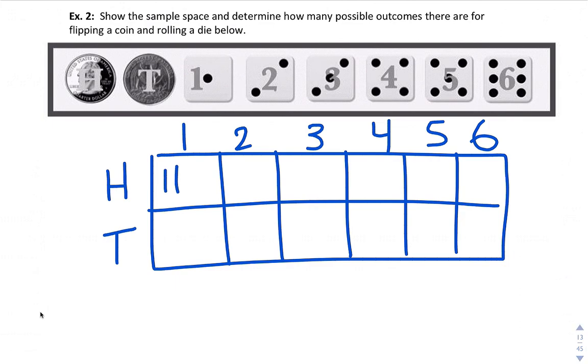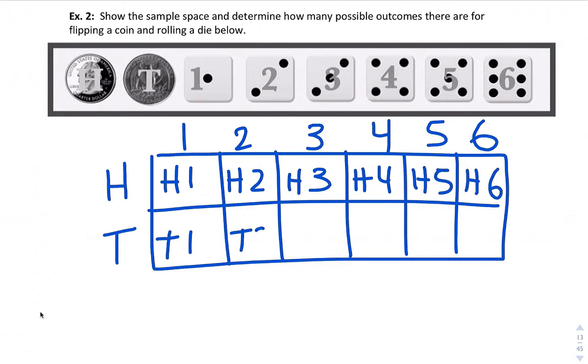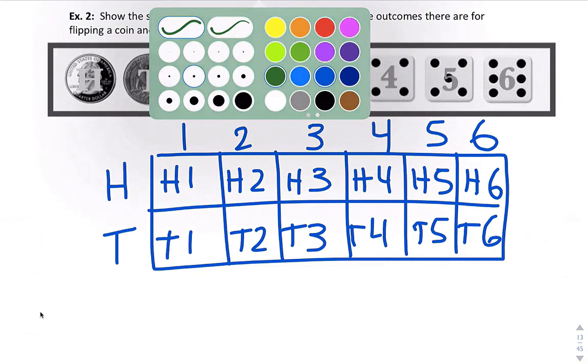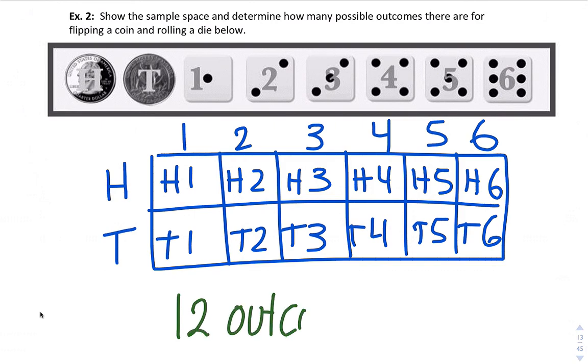Let's say we have a heads and a tails, and we can get the numbers one through six. We can get heads and a one, heads and a two, heads and a three, heads and a four, heads and a five, heads and a six. You can get tails and a one, tails and a two, tails and a three, and so on. If we count all of those, there are 12 outcomes. 12 different outcomes.